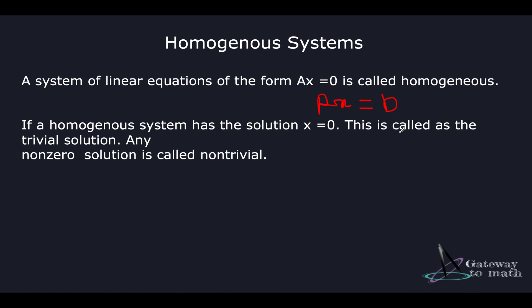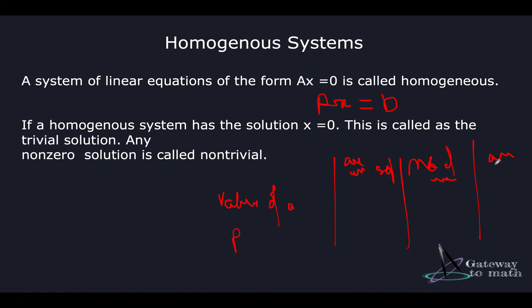A quick overview of why homogeneous systems are important is in the use case of, let's say, if I have to understand the relationship between how certain columns in my data science entries are important, or if I'm making some prediction — for instance, predicting the value of a property over the next 10 years. The column entries might be area in square feet, number of rooms, amenities, and things like that.